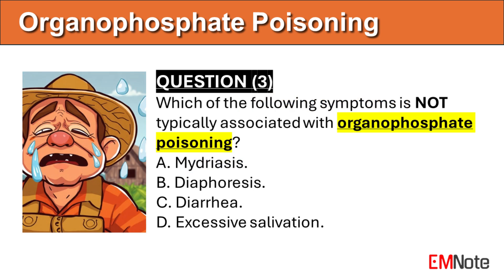Question number 3: Which of the following symptoms is not typically associated with organophosphate poisoning? The correct answer is A. Miosis or pinpoint pupils, diaphoresis, diarrhea, and excessive salivation are typical symptoms associated with organophosphate poisoning.